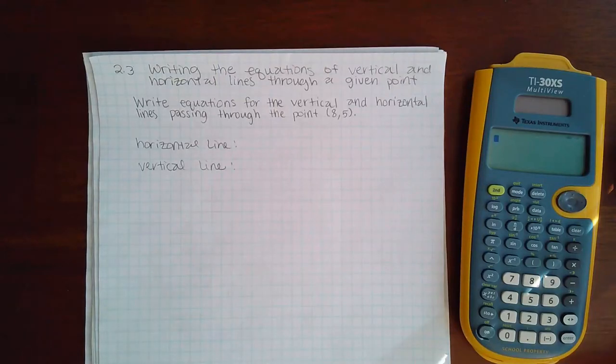Okay, here we have 2.3, writing the equations of vertical and horizontal lines through a given point. So here it says, write equations for the vertical and horizontal lines passing through the point (8,5).